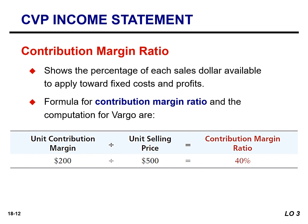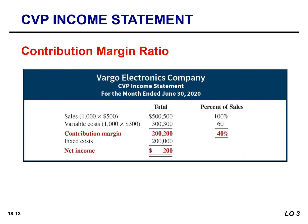Some managers prefer to use a contribution margin ratio in CVP analysis. The contribution margin ratio is contribution margin expressed as a percentage of sales, determined by dividing unit contribution margin by unit selling price. For Vargo, taking the unit contribution margin of $200 divided by the selling price of $500 gives a contribution margin ratio of 40%. This means Vargo generates $0.40 of contribution margin with each dollar of sales, so $0.40 of each sales dollar is available to apply to fixed costs and contribute to net income.